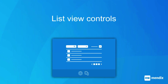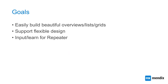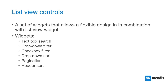Another thing I wanted to quickly mention is the list view controls. With the list view controls, we wanted to make it easy to create more flexible overviews, lists, or grids — since the list view, template grid, and data grid are all quite limited in how you can design them, especially the data grid. It's a set of widgets you can combine with the list view: a text box search for one or multiple attributes, a dropdown filter, a checkbox dropdown, sort options, different pagination options, and a header widget to create a more tabular view.